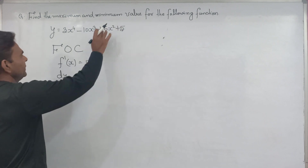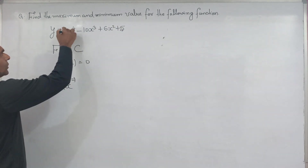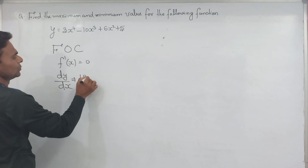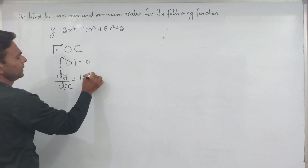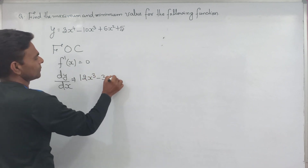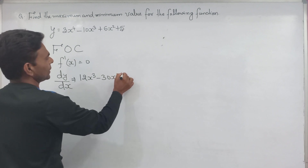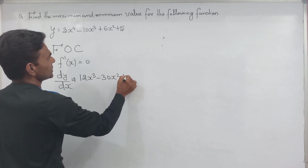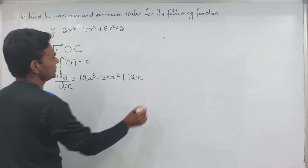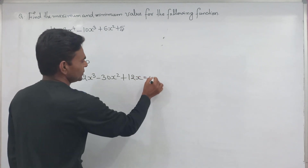So taking the derivative with respect to x, we get 12x to the power 3 minus 30x square plus 12x, and the derivative of 5 is 0. This is set equal to 0.